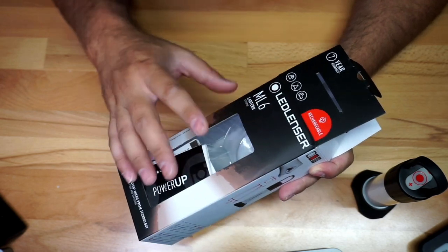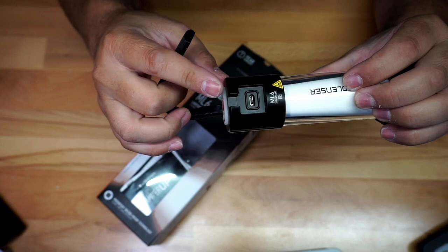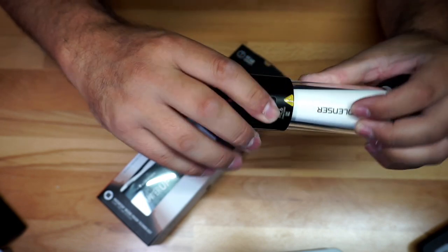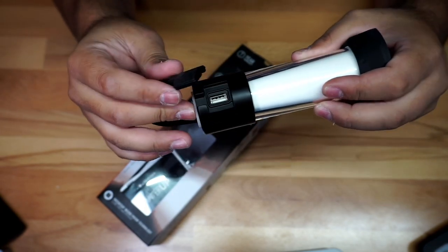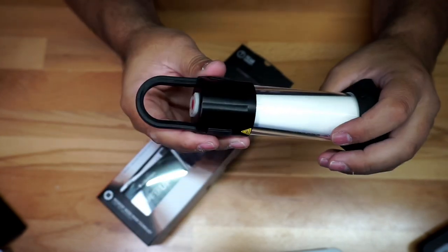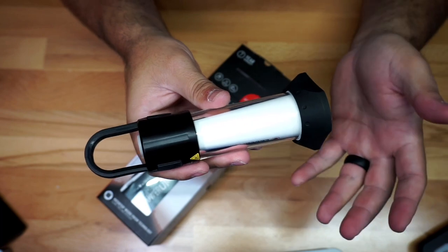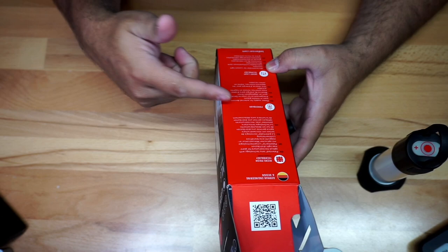It's rechargeable but it also allows you to recharge your cell phone. One side here has your port for charging it and then the other side has a USB-A that allows you to take some of the power out and charge your cell phone. So you could have lights in your tent if you go camping but you're also charging your cell phone.